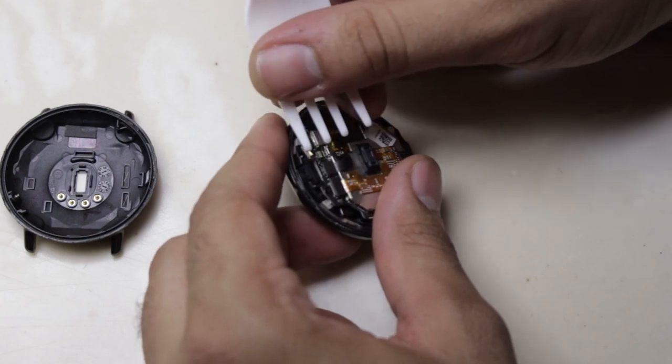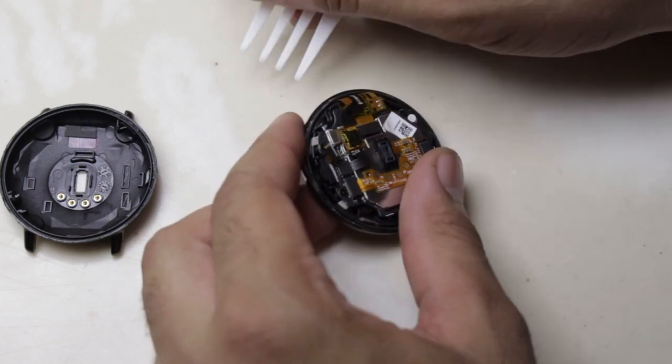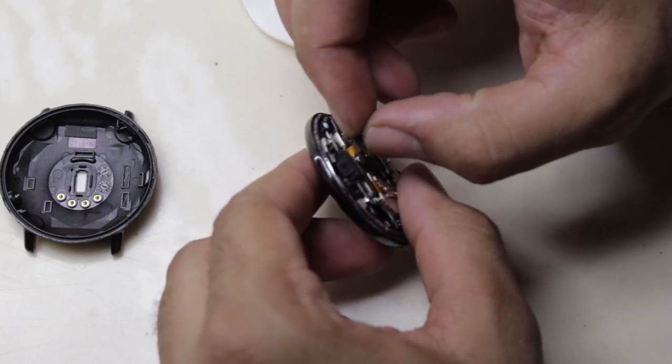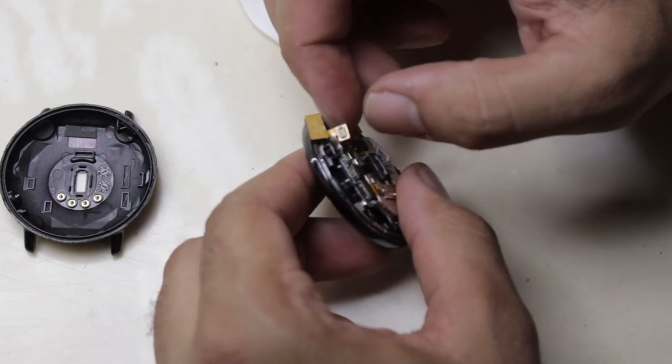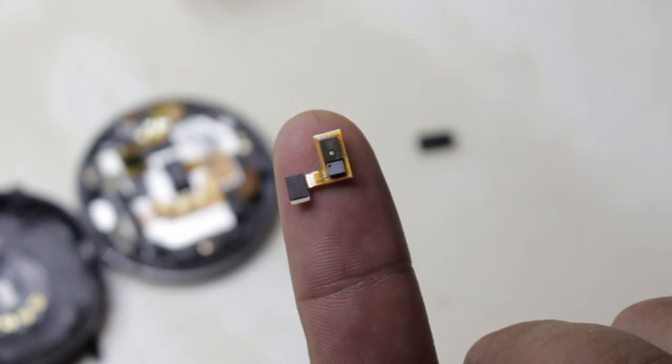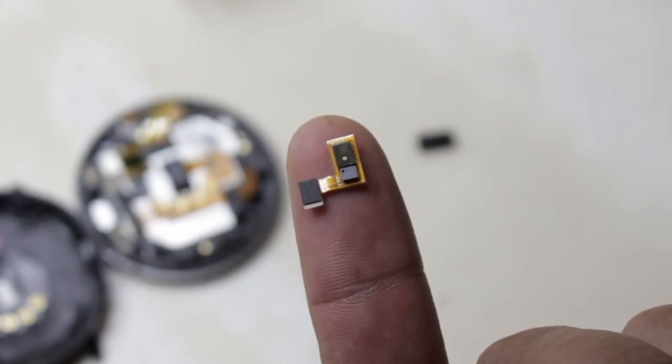So it turns out that the barometer was causing the issue. Once you remove it the watch functions fine with no issues at all except that it won't. It will no longer give you a altitude reading whenever you do an activity. So if you go skiing you know say goodbye to that functionality.